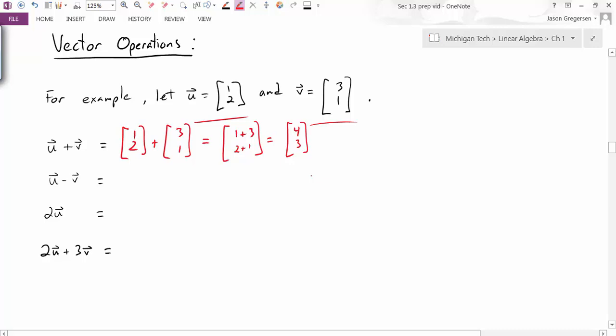When I subtract two vectors, once again, I just subtract their components. So 1, 2 minus the vector 3, 1 will result in the vector negative 2, 1.